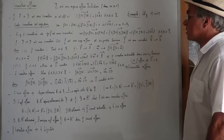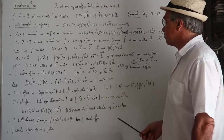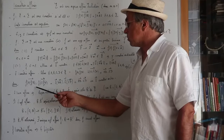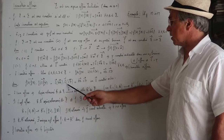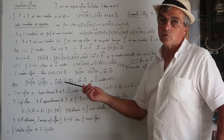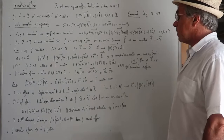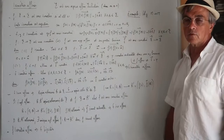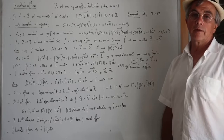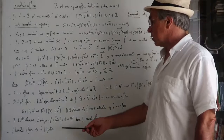Si F est une isométrie affine, alors si on prend quatre points quelconques, on a la relation de conservation du produit scalaire : Φ(AB)·Φ(CD) = AB·CD, car la partie linéaire est une isométrie et Φ(U)·Φ(V) = U·V. Si F est une isométrie affine, alors c'est une bijection : sa partie linéaire est une isométrie vectorielle, donc une bijection, et donc quand la partie linéaire est une bijection, F aussi est une bijection.